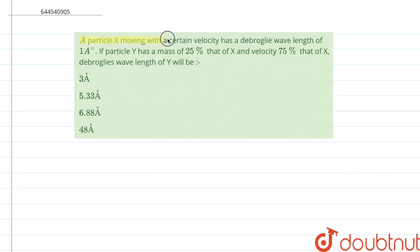A particle X moving with a certain velocity has a de Broglie wavelength of 1 angstrom. If particle Y has a mass of 25% that of X and velocity 75% that of X,